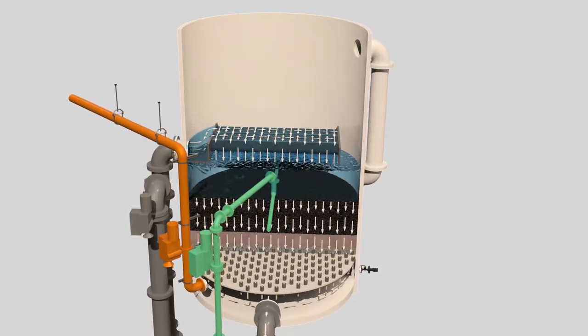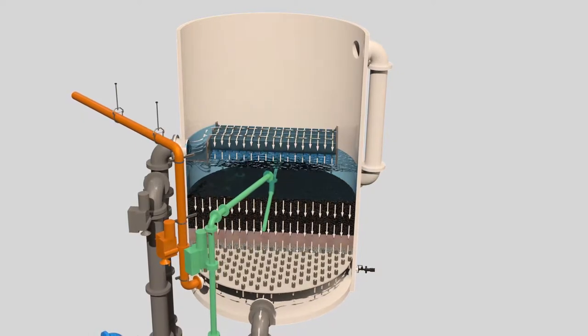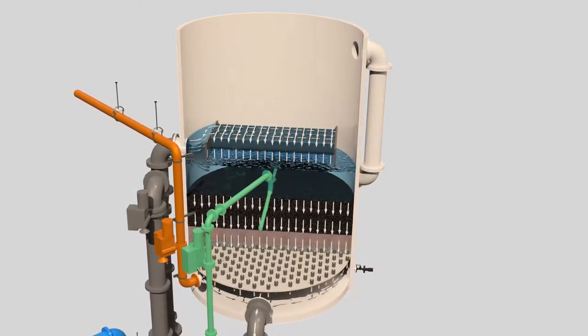Acidification also reduces the potential for calcium carbonate to scale onto the secondary reverse osmosis membranes, causing them to clog.